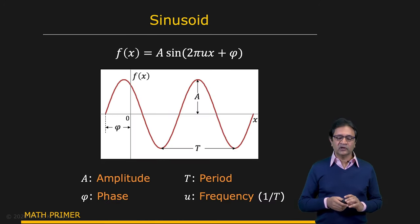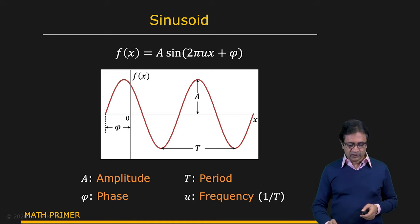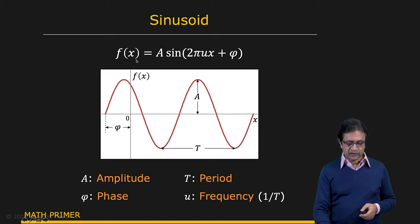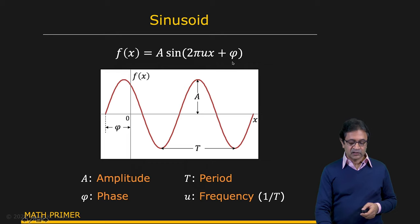So now, since we're talking about sinusoids, let's start with a little primer on sinusoids. Here is your sinusoid: f(x) = a·sin(2πux + ψ). Here, a is the amplitude of the sinusoid, u is the frequency, 1/u is the period, and ψ is the shift or the phase of the sinusoid.